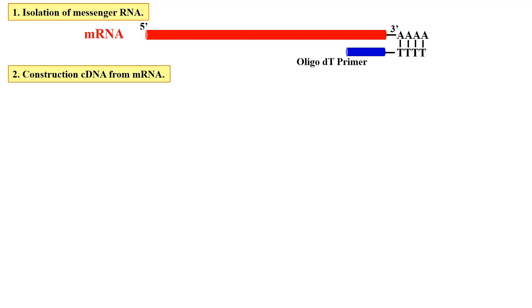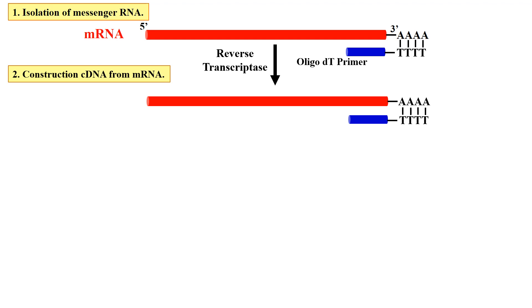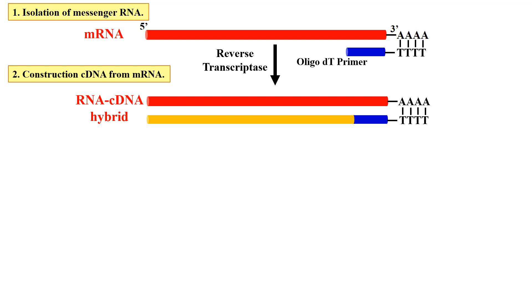Now, as this primer has been attached with this messenger RNA, this primer will be used as an initiator for the DNA synthesis. Here we use an enzyme called reverse transcriptase. This enzyme has the property that it can make DNA from RNA. That's why we are using reverse transcriptase. By using this enzyme, the oligo-dT primer is now elongated, and the new DNA strand will be there, shown here in yellow color. So now you have an RNA and cDNA hybrid.